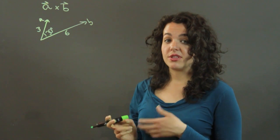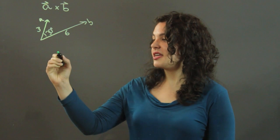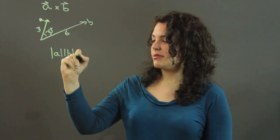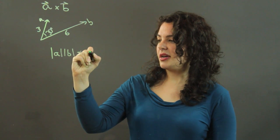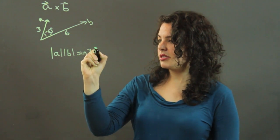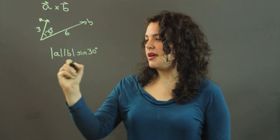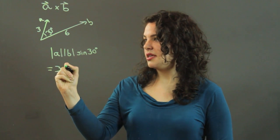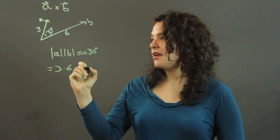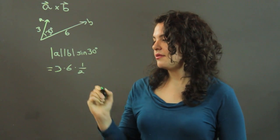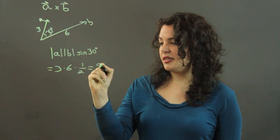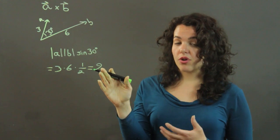Let's start out by finding what the magnitude of the cross product is. To get that, we take the magnitude of A times the magnitude of B, multiply it by the sine of theta, which is this angle here, so we put in 30 degrees. The magnitude of A is 3, B is 6, and the sine of 30 degrees is 1/2. So 3 times 6 is 18, times 1/2 is 9. So 9 is the magnitude of the cross product.